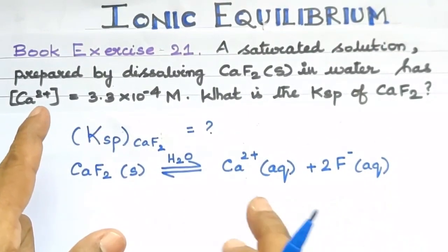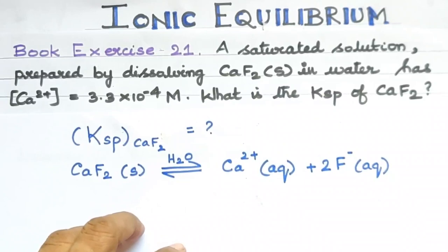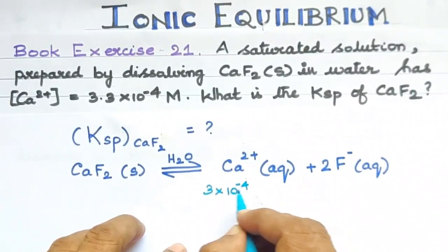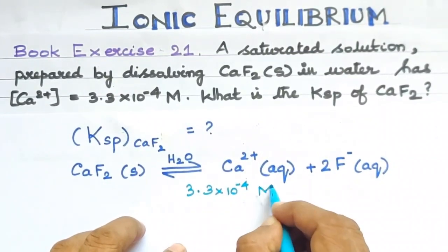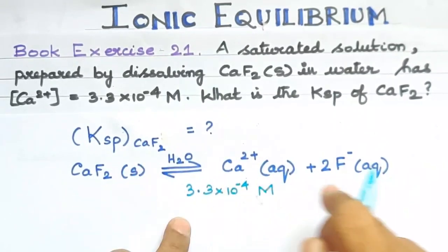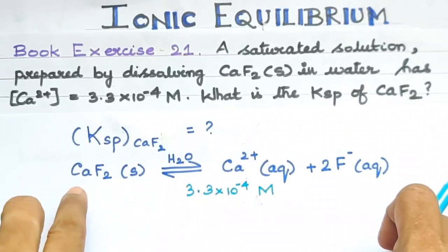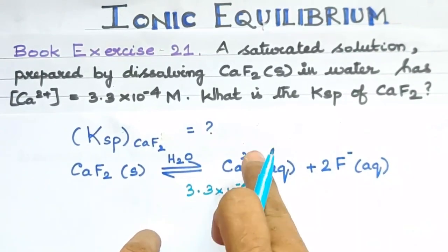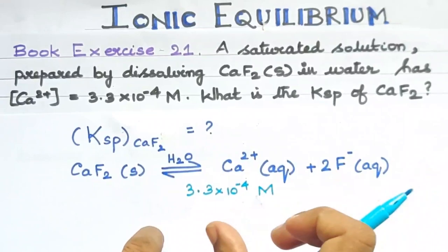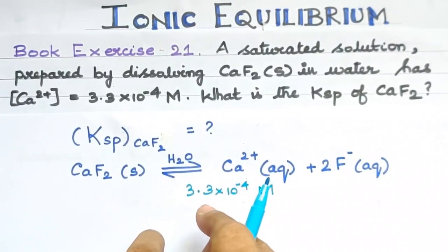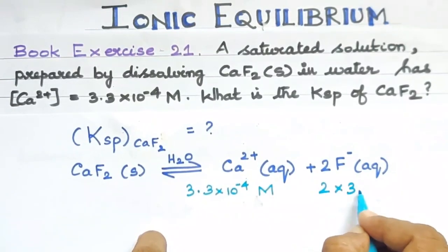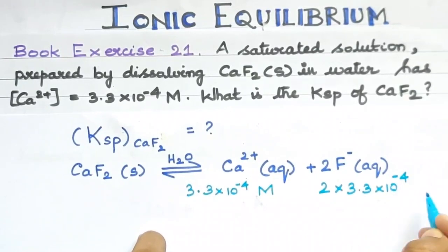From the equation, calcium ion concentration is 3.3×10⁻⁴ M. Since 1 calcium ion produces 2 fluoride ions, the fluoride ion concentration is 2×3.3×10⁻⁴ M.